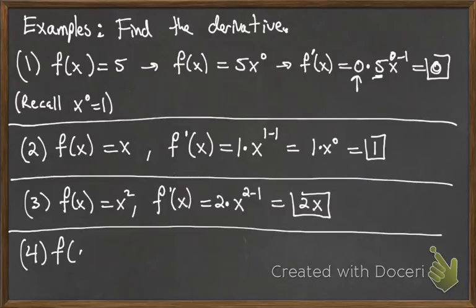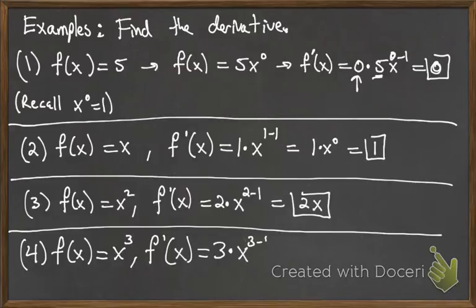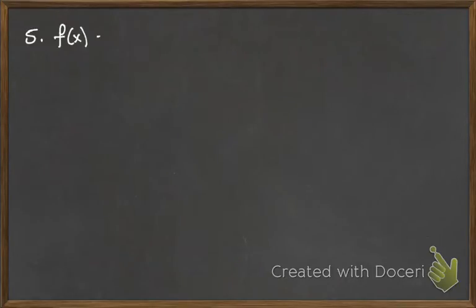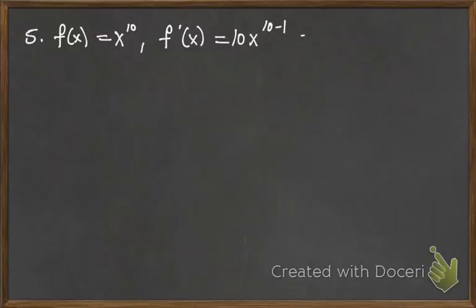For f(x) = x³: bring down the exponent, giving 3·x^(3−1) = 3x². That's the slope-generating function. For f(x) = x^10: bring down the exponent of 10, giving 10·x^(10−1) = 10x⁹.